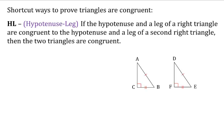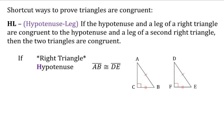Now let's look at HL, which stands for hypotenuse-leg. If the hypotenuse and a leg of a right triangle are congruent to the hypotenuse and leg of a second right triangle, then the two triangles are congruent. There's a hidden congruence here — both triangles must have a right angle, so they must both be right triangles. We can show hypotenuse AB is congruent to DE, and leg CB is congruent to FE. I just need one hypotenuse, one leg, and of course a right triangle. So triangle ABC is congruent to triangle DEF.